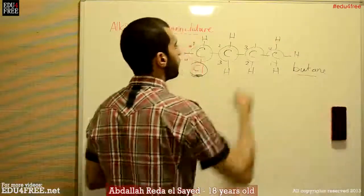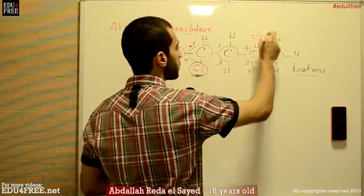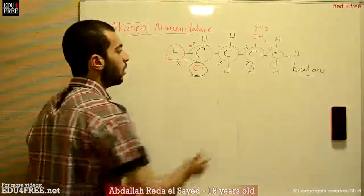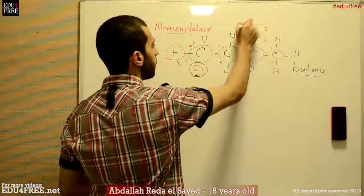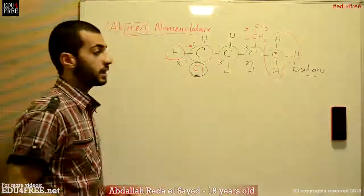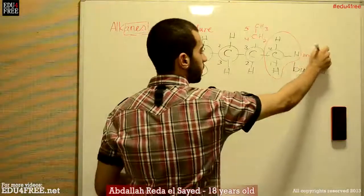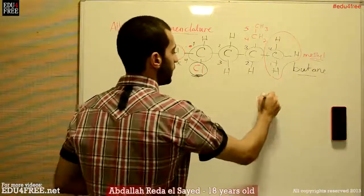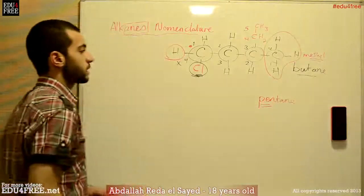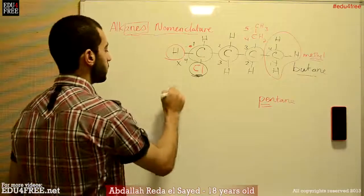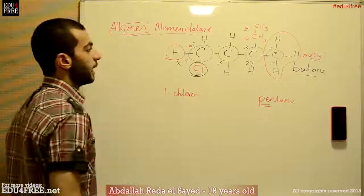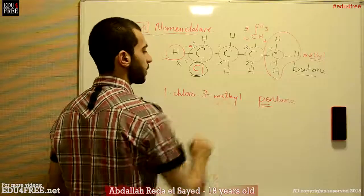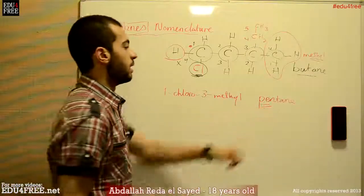We actually have 2 carbons in the ethyl group, not 1. There is a CH2 attached to a CH3 here. So the longest chain is 1, 2, 3, 4, 5, making this a pentane. In that case, what was counted as the ethyl group becomes just a methyl substituent. So the name becomes 1-chloro-3-methylpentane.